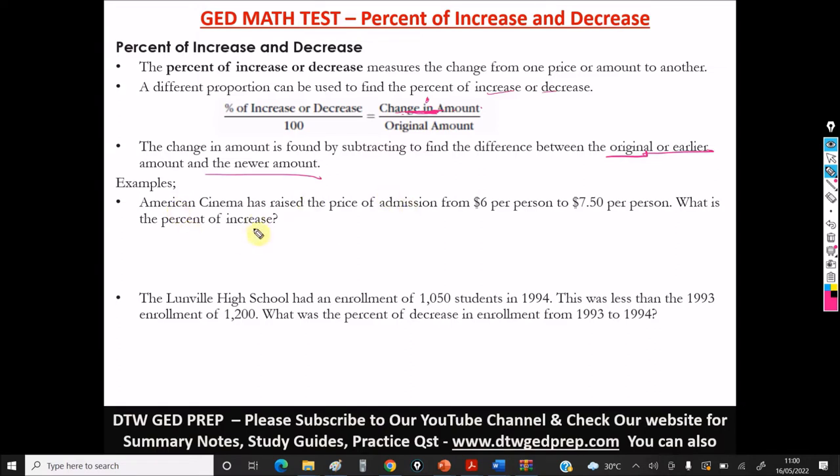And we're going to look at an example here. Now, this first example says, an American cinema has raised the price of admission from $6 per person to $7.50 per person. What is the percent increase? You can see that there's an increment here, but now in math, sometimes they ask, what's the percent increase? By what percentage?